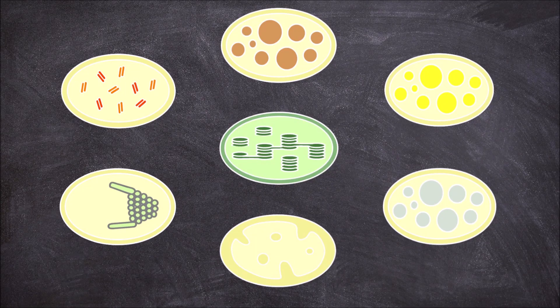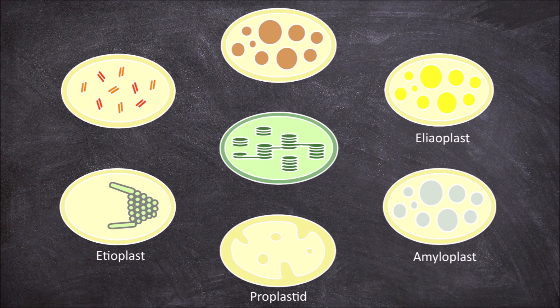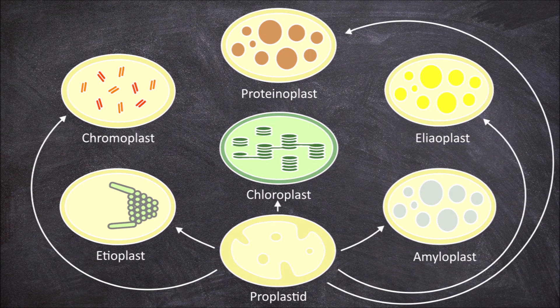In this video we are going to go over the different types of plastids. Plastids are double-membraned organelles found in plants and some algae. There are many kinds of plastids including the proplastid, etioplast, amyloplast, elaioplast, proteinoplast, chromoplast, and the chloroplast. Many of these plastids are able to convert into one another.